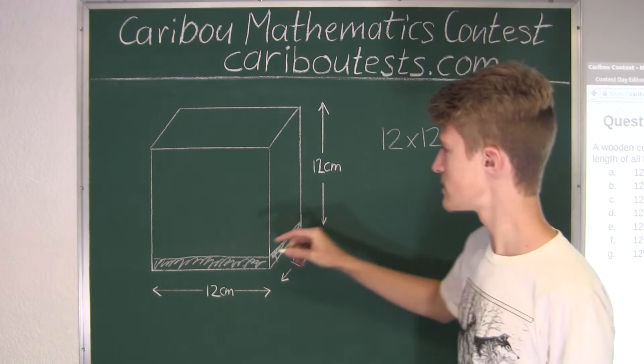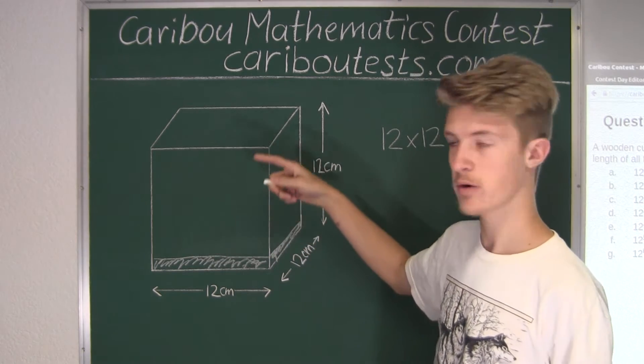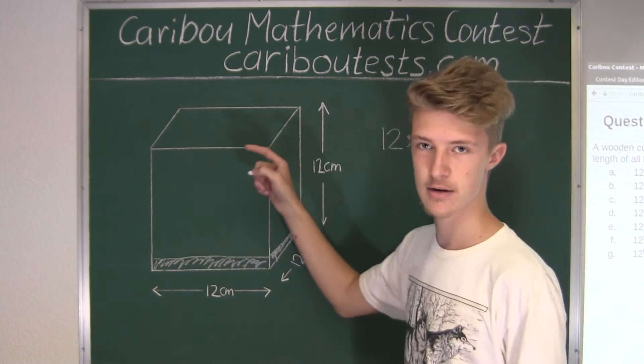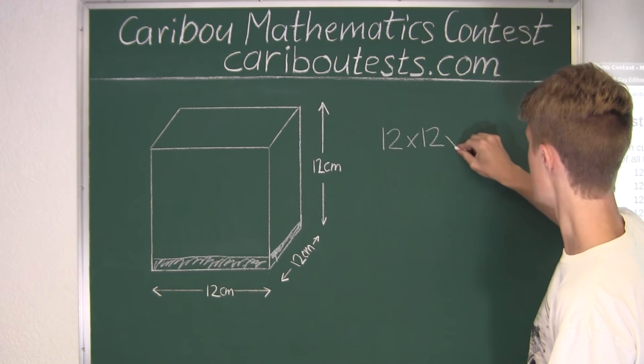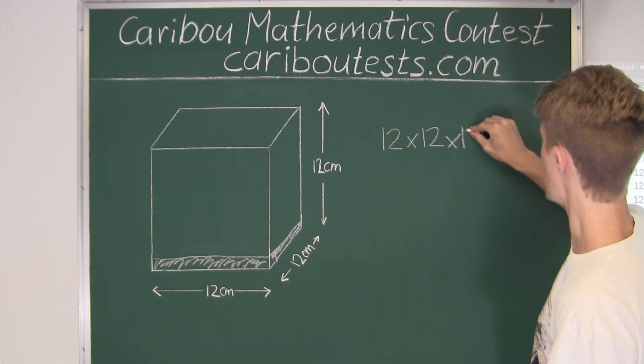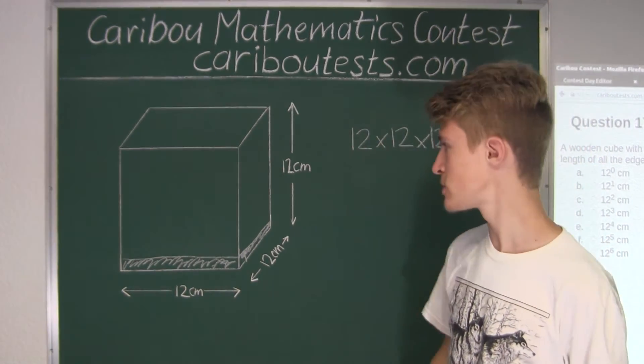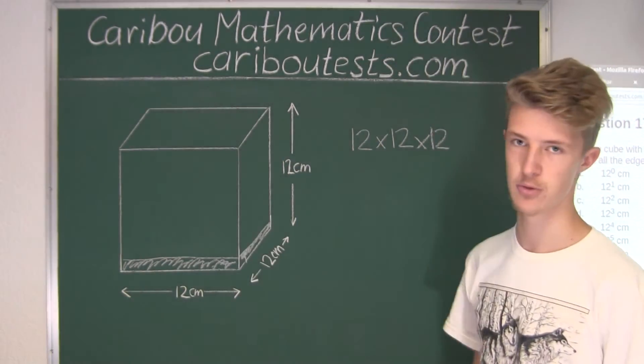And finally, if we wanted to fill the whole cube with smaller cubes, well then in total we would need 12 layers. So again, we would have another 12. So we have 12 times 12 times 12, and that is the number of smaller cubes that would fit inside of this large cube.